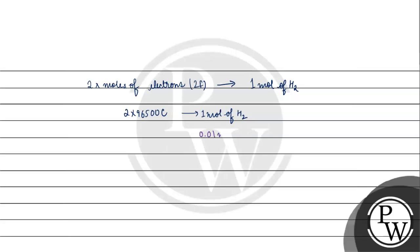We need to find the charge for 0.01 mole of hydrogen. So the charge will be 2×96500×0.01 = 2×965 coulombs.